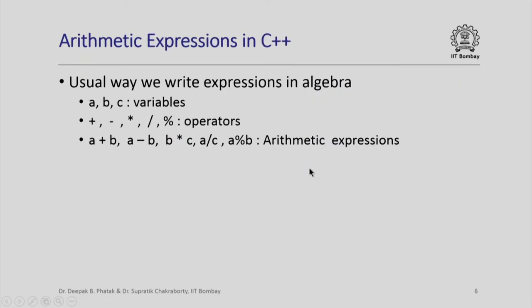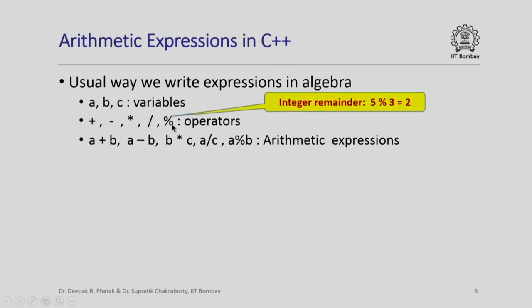How do we write arithmetic expressions in C++? We have variables A, B, C and different kinds of operators: addition, subtraction, multiplication denoted by a star, division denoted by a slash, and the remainder operator denoted by percent. For example, 5 % 3 means the remainder of 5 divided by 3, which is 2. All of these are binary operators and we can use them to form expressions like A plus B, A minus B, A divided by C, A percent B, and so on.